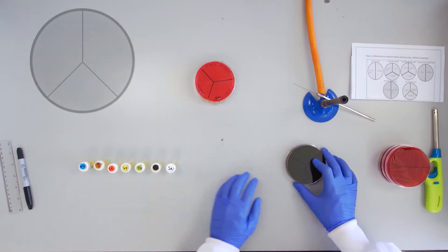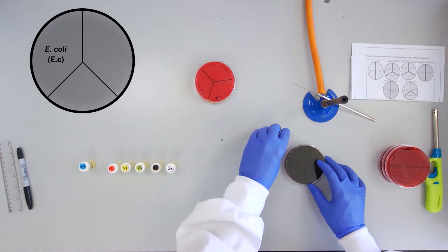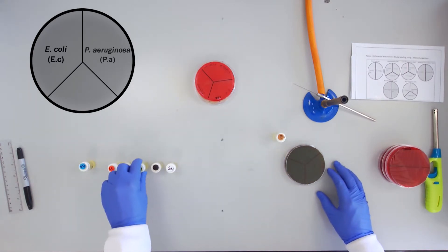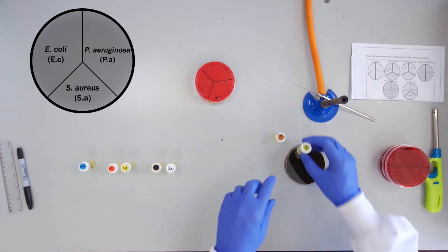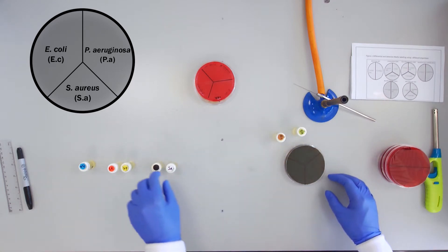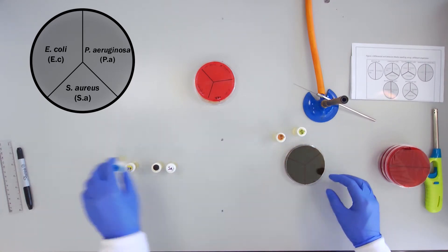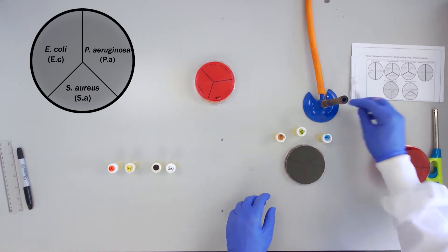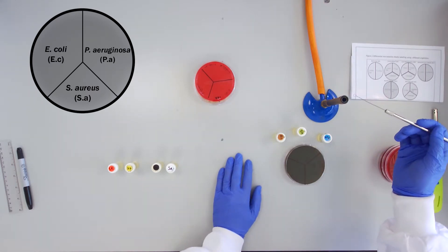The eosine methylene blue plate or EMB is a brownish color and will be inoculated with E. coli, Pseudomonas aeruginosa, and Staphylococcus aureus.